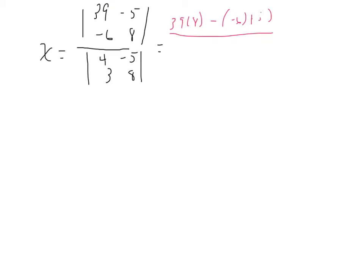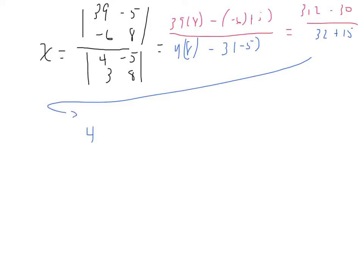In the denominator we have 4 times 8 minus 3 times negative 5. In the numerator that gives us 312 minus 30, and in the denominator 32 plus 15. The denominator becomes 47. In the numerator, 312 minus 30 equals 282, and 282 divided by 47 gives us 6. So x equals 6.